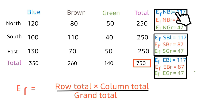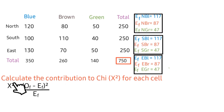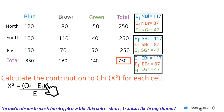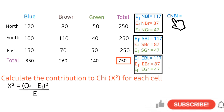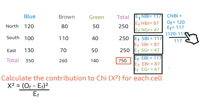We have succeeded in calculating all expected frequencies for the nine cells of the three-by-three contingency table. Next is to calculate the contribution to chi-square for each cell using the formula: (observed frequency minus expected frequency) squared, divided by expected frequency. For the northern region with blue eye color, the observed frequency is 120, minus the expected frequency of 117, all squared divided by 117.